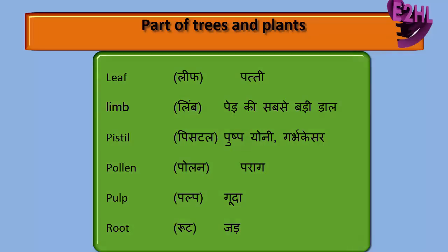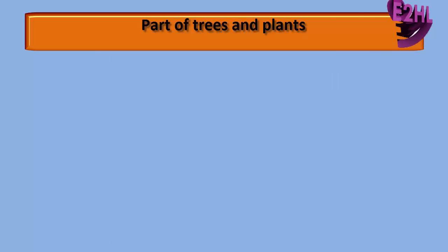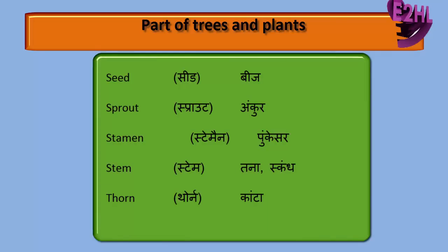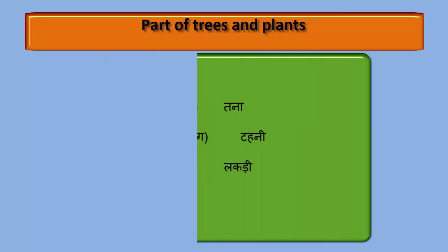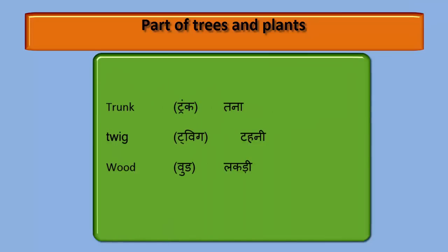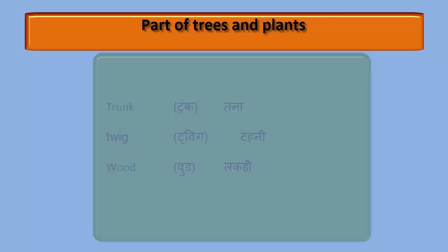Root — Judd. Seed — Beej. Sprout — Kankut. Stamen — Pungkissar. Stem — Tana, Yaskan. Thorn — Kata. Trunk — Tana. Twig — Tehni. Wood — Lakri.